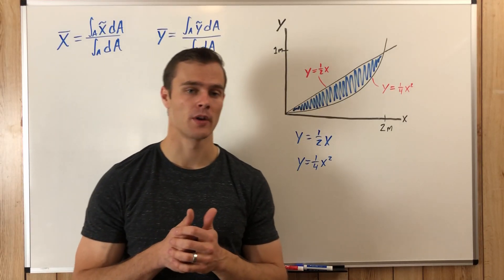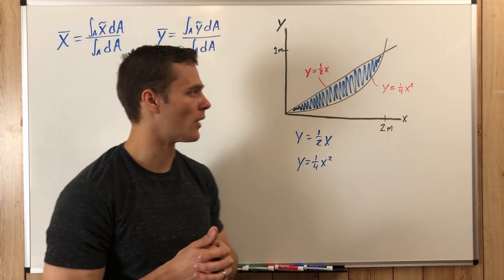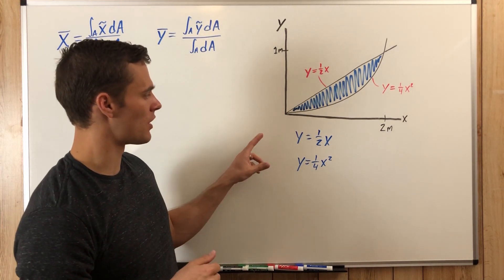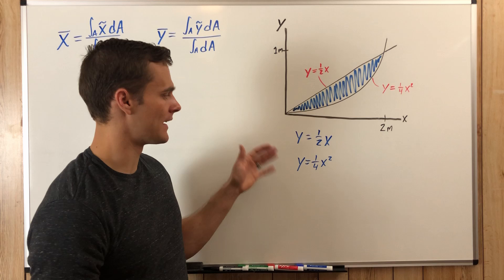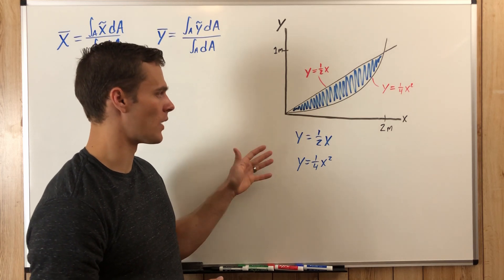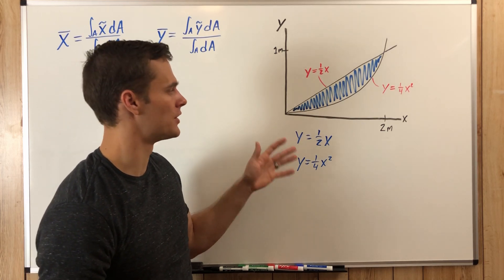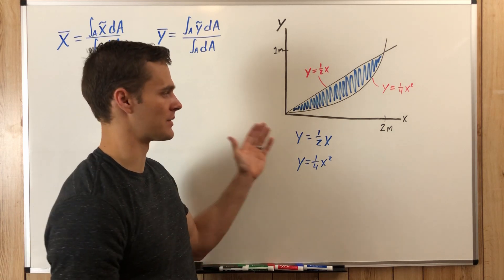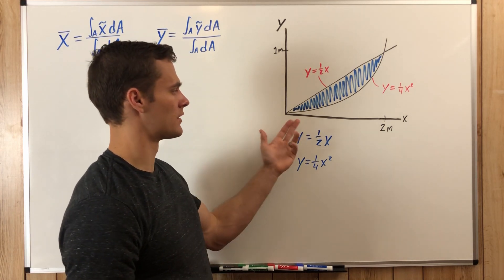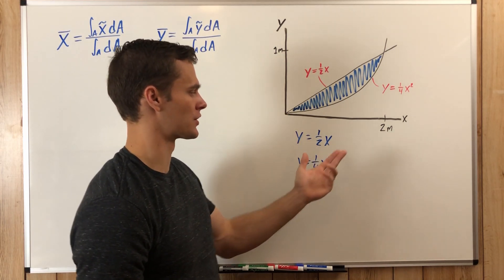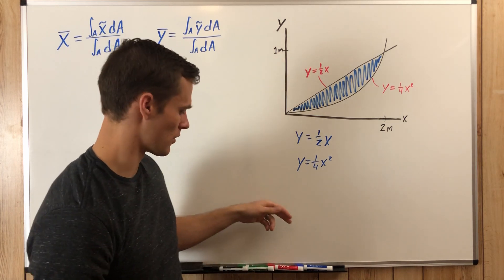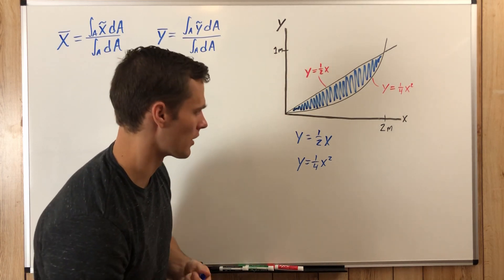So the first thing we want to do, since we're going to be integrating with respect to Y, we need to solve these equations for X. Now since they're already solved for Y, normally I would just integrate this with respect to X, with the vertical strips, but for this example we are going to integrate with respect to Y.